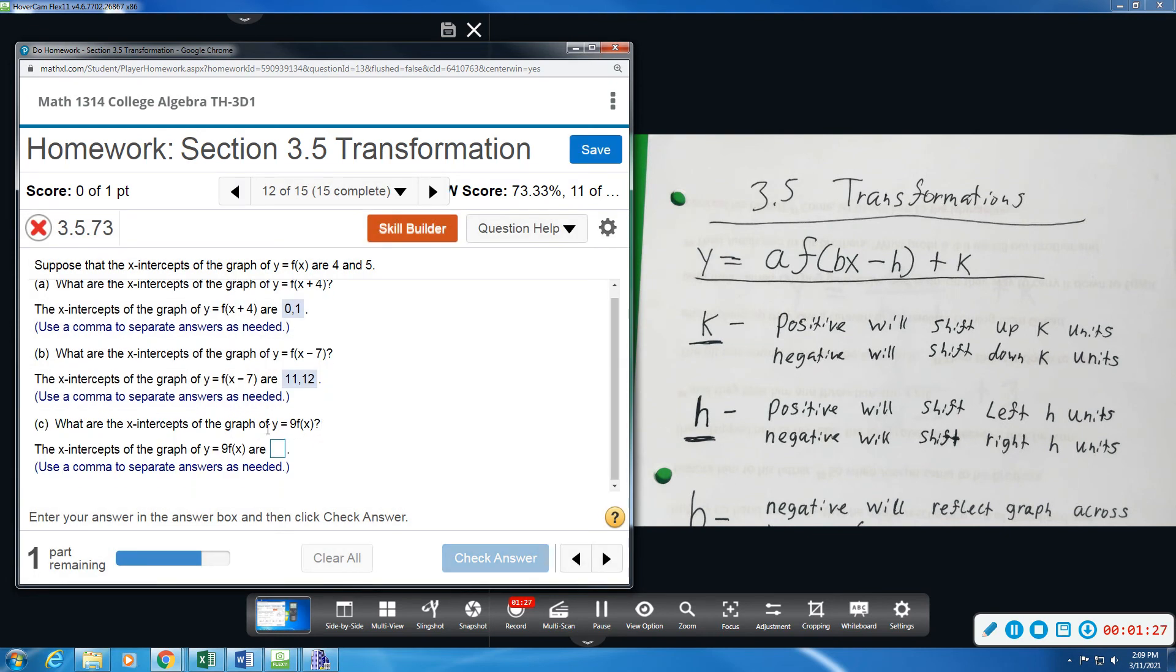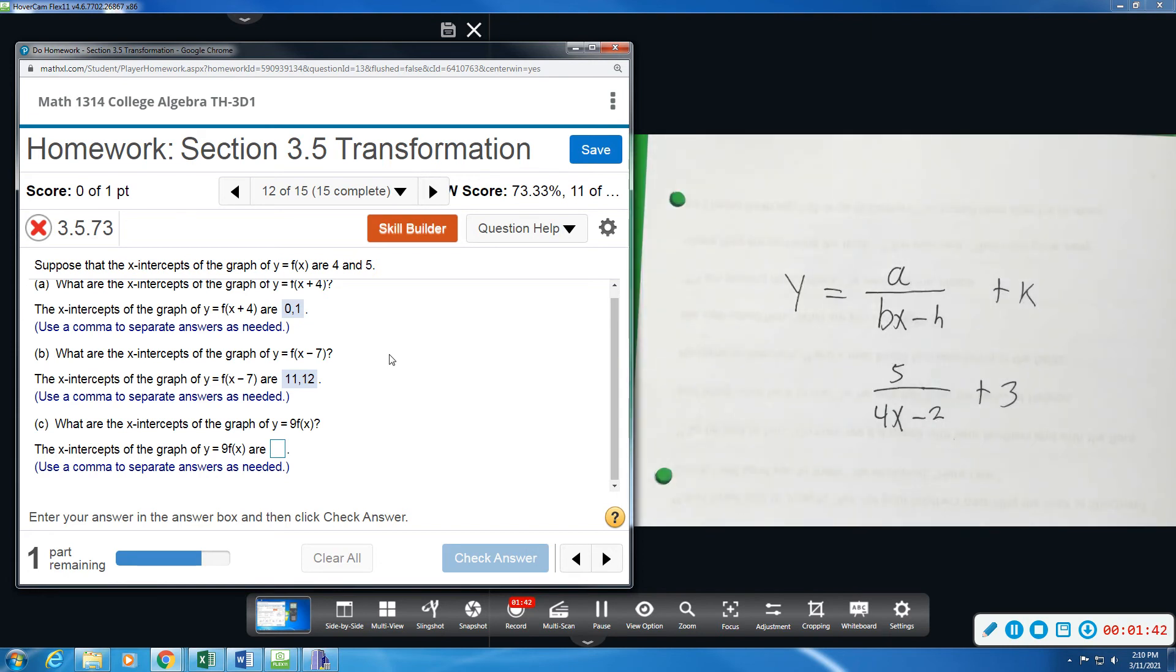And then the 9 on the outside. This will shift or this will multiply our y-value by 9. Now when we deal with the x-intercept, the y-value is 0 because we're on the x-axis.